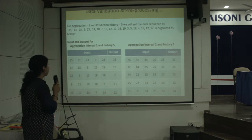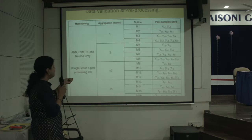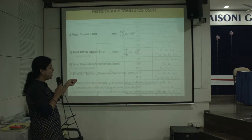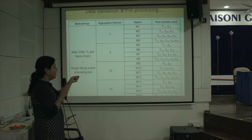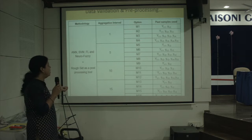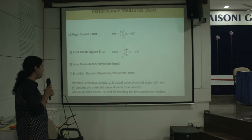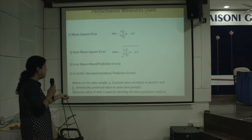The system uses four prediction methods with rough set as a post-processing tool, with aggregation intervals of 1, 5, 10, and 15 and past samples of 2, 3, 4, and 5 — giving 4 combinations per aggregation interval and a total of 16 combinations per method. Performance measures used are mean square error (MSE), root mean square error (RMSE), error mean (average of all errors), and error standard deviation, where n is the data sample, yt is the actual value, and ŷt is the predicted value.